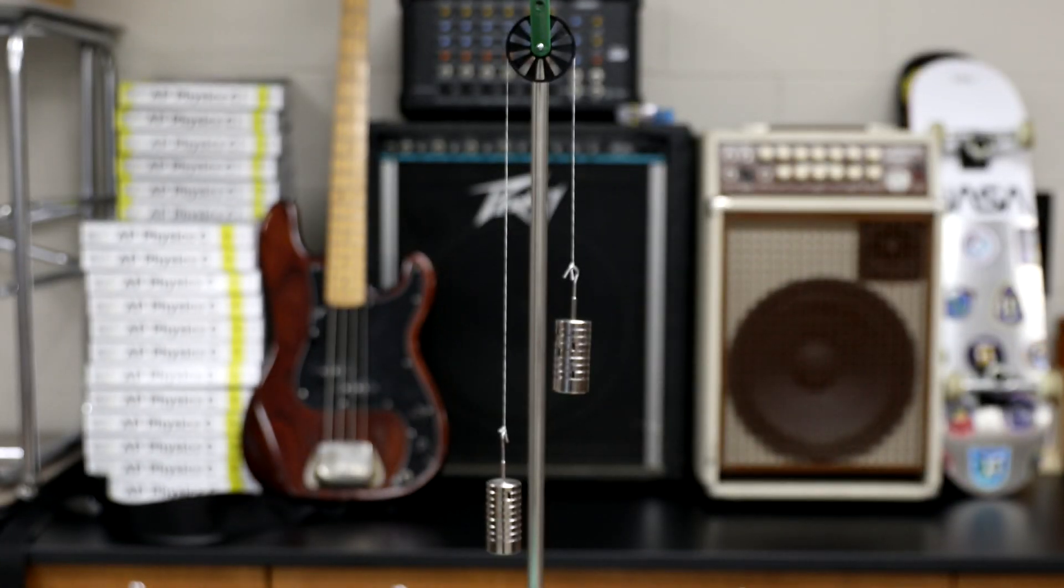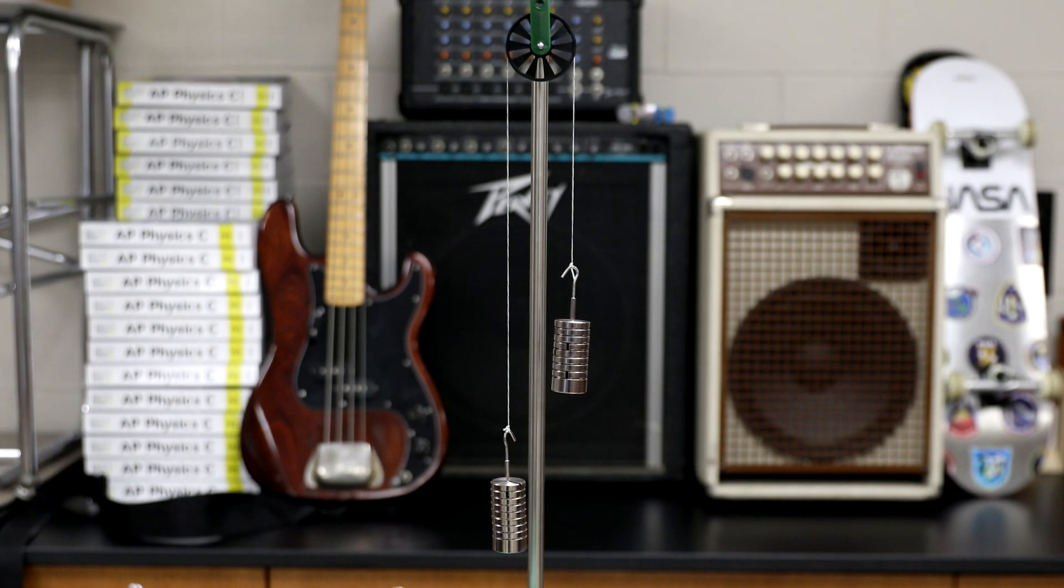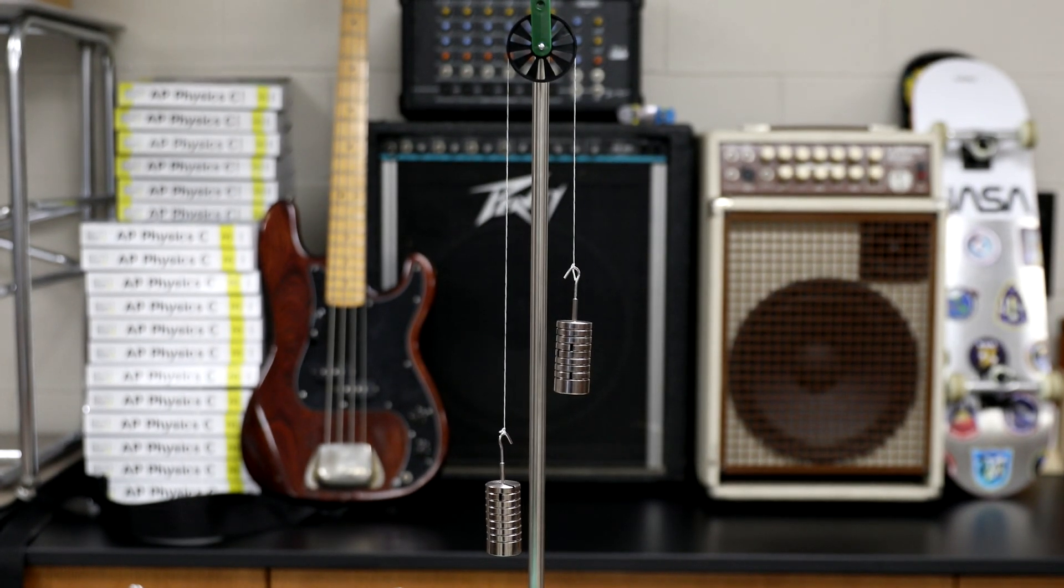In this video we're going to talk about the Atwood's machine. The Atwood's machine was invented by George Atwood in 1784 to verify Isaac Newton's laws of motion.